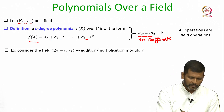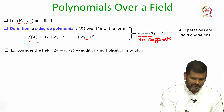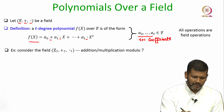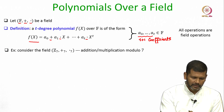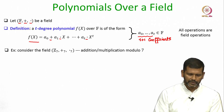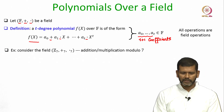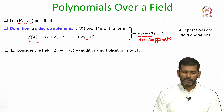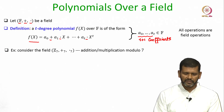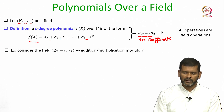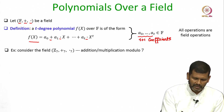The field need not be finite; it could be an infinite field. All the plus and dot operations are the field operations. For instance, consider the field Z7 where the operations are addition modulo 7 and multiplication modulo 7.